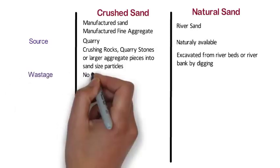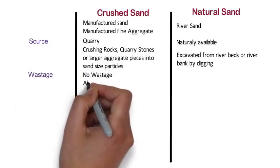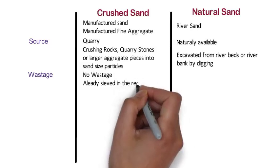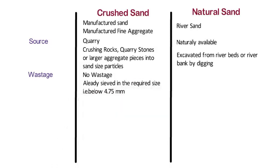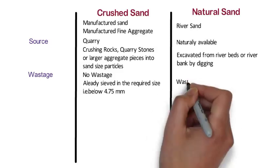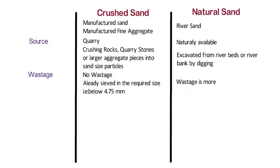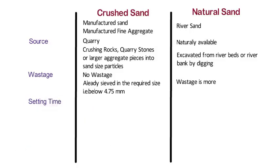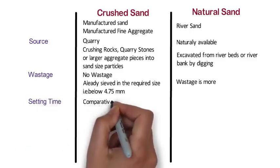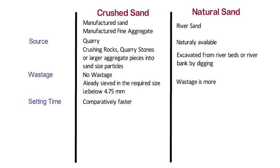Wastage: There is no wastage in crushed sand since it is already sieved in the required size, that is below 4.75 mm. Whereas in the case of river sand, the wastage is more as compared to crushed sand. Setting Time: When crushed sand is used in concrete, the setting time is comparatively faster, but when river sand is used, the setting time is normal.